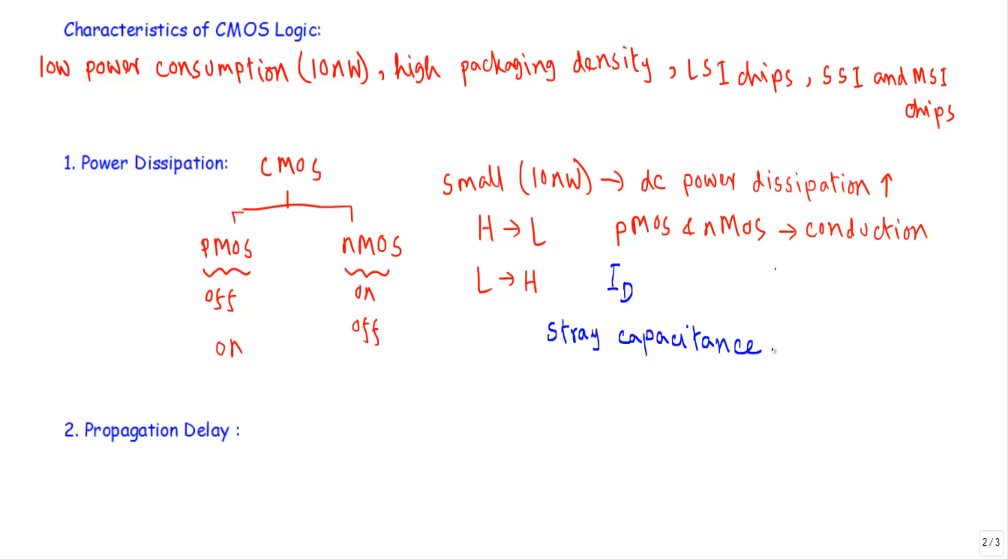Moreover, any stray capacitance in the output has to be charged before the change in the output takes place. Therefore, the charging of the capacitor requires an additional current that is drawn from the power supply, resulting in an increase in the supply current. The average power dissipation in CMOS device whose output is consistently changing is called active power dissipation, and the active power dissipation increases with the increase in the supply voltage as well as frequency.